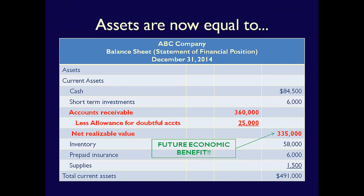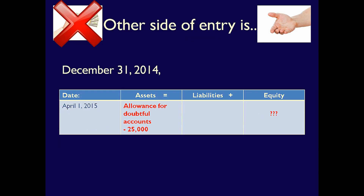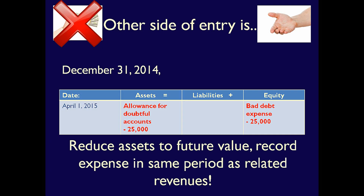It's recorded immediately under accounts receivable on the balance sheet so that accounts receivable is now valued at its estimated future economic benefit. What's the other side of the entry to record the estimated uncollectable amount for 2014? Under the element assets, we would record negative $25,000 to the Allowance for Doubtful Accounts, or AFDA. Under equity, we would record negative $25,000 to the Bad Debt Expense Account. This would reduce assets to their estimated future cash value and match expenses to the revenues they helped to generate in 2014.